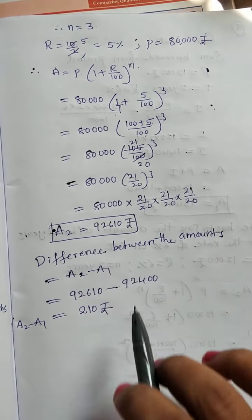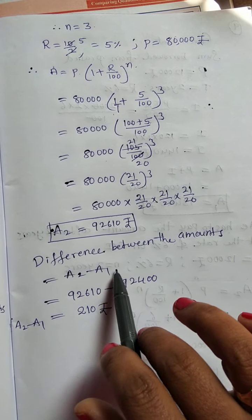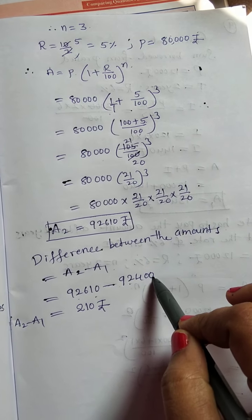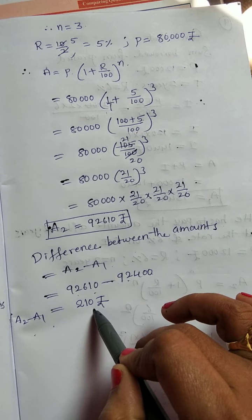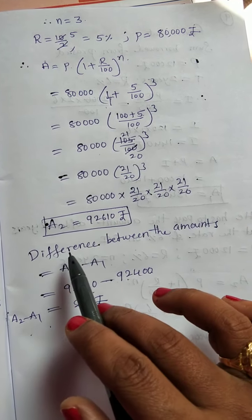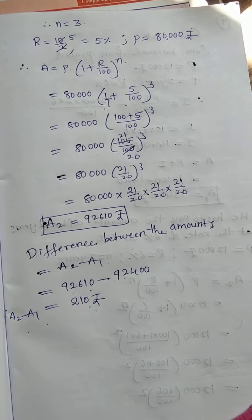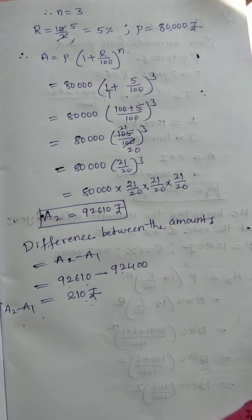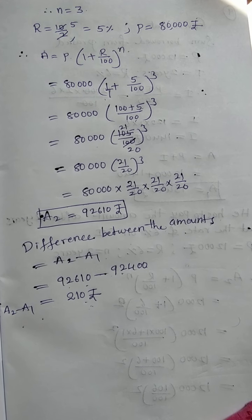Now the difference between the amounts: A2 − A1 = 92,610 − 92,400 = 210 rupees. The difference between the amounts is 210 rupees. I hope you understood. For more videos, subscribe to my channel and support me.